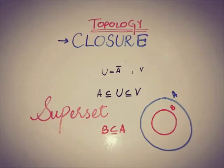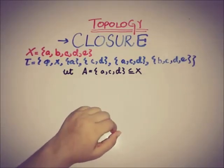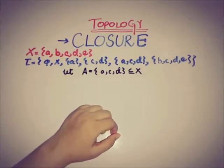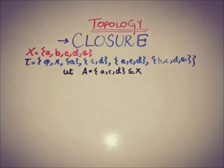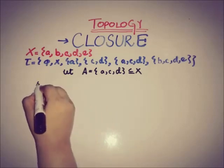Now we'll see an example to clarify the concept of closure. Let's say we have a set X with a topology τ, and A is a subset of X equal to {a, c, d}. We need to find the closure of A, so first we find the supersets of A.